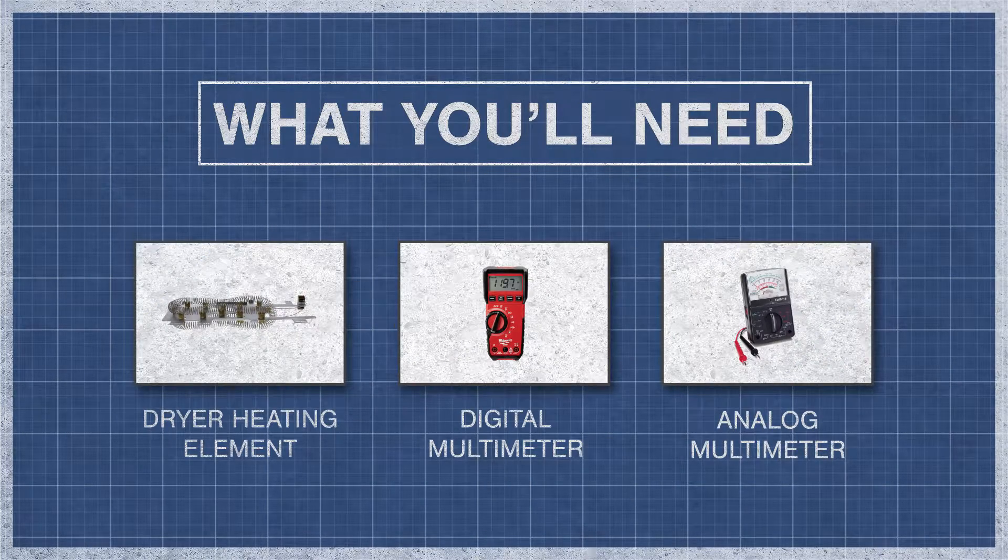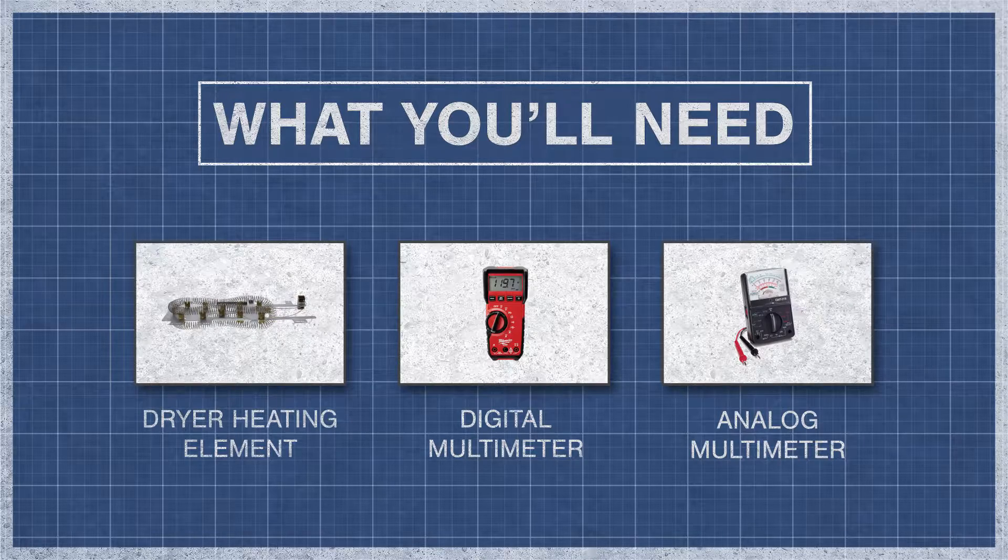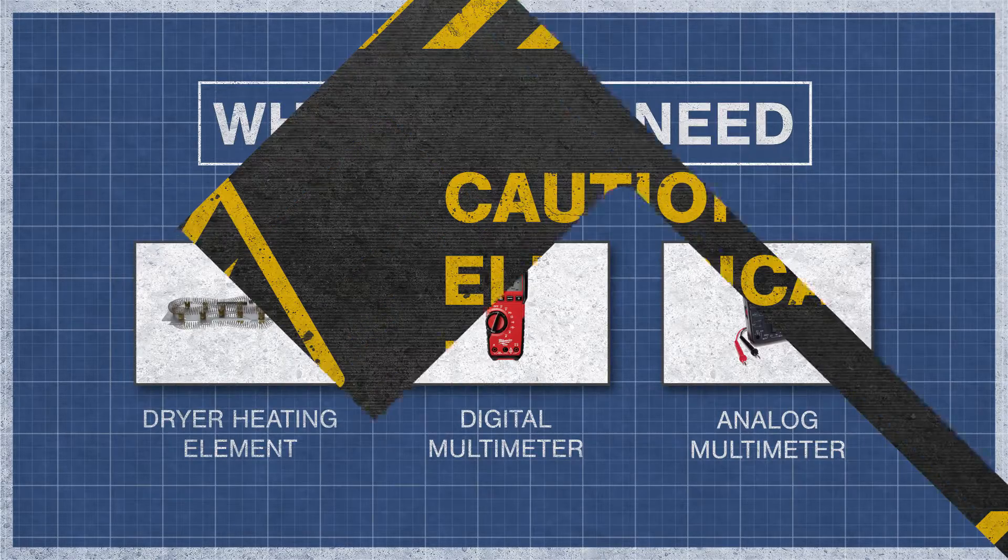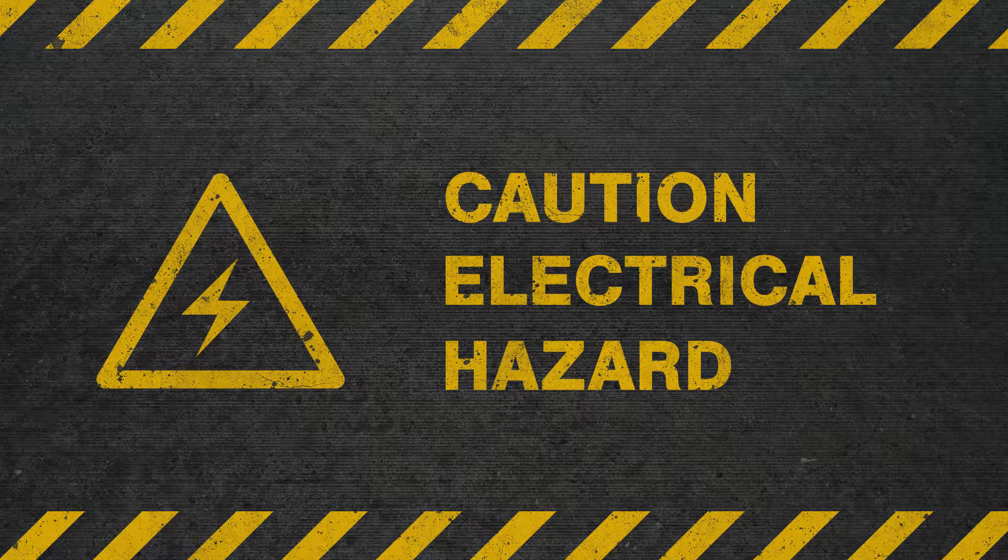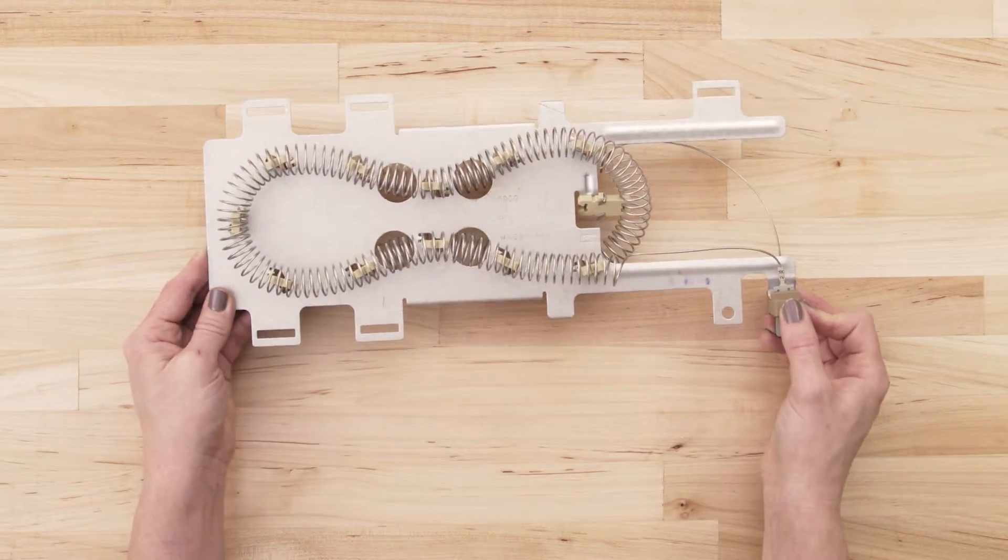All you'll need is your dryer heating element and a digital or analog multimeter. To be safe, turn off the breaker and fully unplug the dryer from the receptacle. Now separate or remove the heating element.